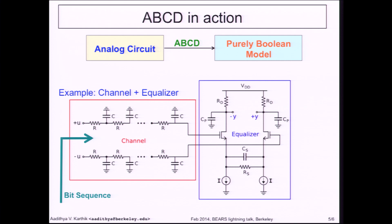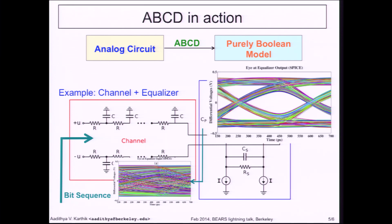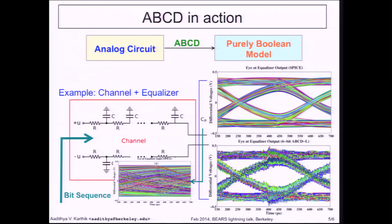Here is a quick example of ABCD in action. We have a channel followed by an equalizer — this is an analog system. You push in a bunch of bits at the left, and the channel essentially messes up the bits so much that you can no longer distinguish a zero from a one. But that's where the equalizer comes in: it corrects the output of the channel, and here you have an eye diagram that allows you to distinguish a zero from a one. This is a continuous system, so using ABCD we Booleanized the system. This is the eye diagram predicted by the purely Boolean model, and as you can see the Boolean model is almost as accurate as the continuous system.